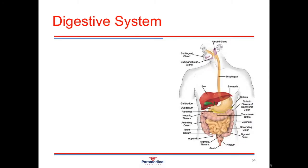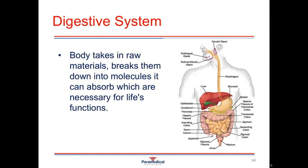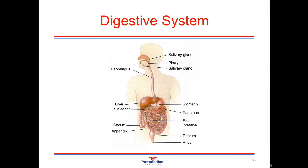The next few systems we're just going to touch on very lightly before finishing off our introduction to anatomy and physiology. The first one we'll have a look at is the digestive system. The digestive system is a collection of different organs and glands responsible for taking in raw materials, breaking them down into small molecules which the body can absorb and which the cells can use to perform the different functions necessary for life. These different organs are also responsible for the elimination of waste products.